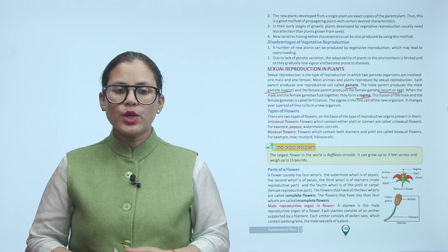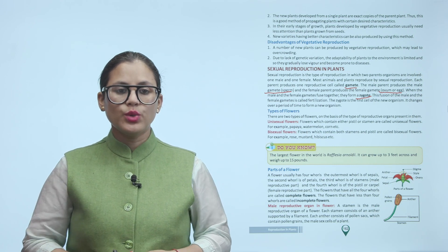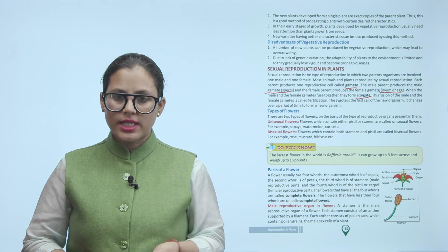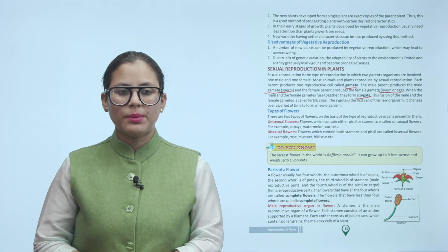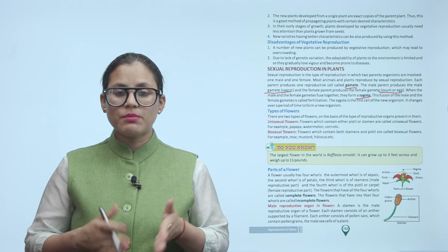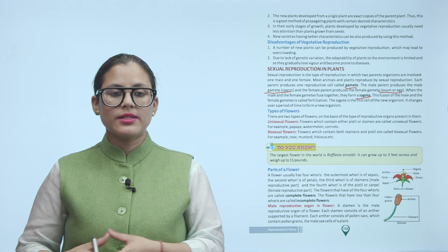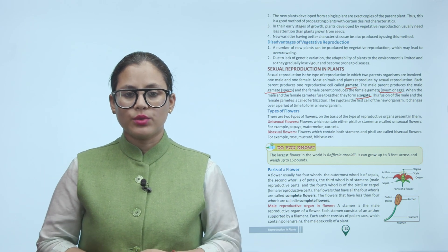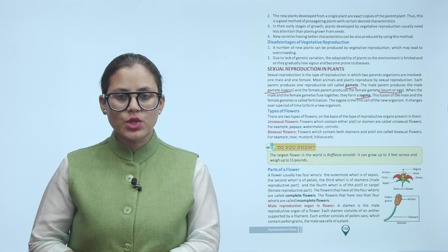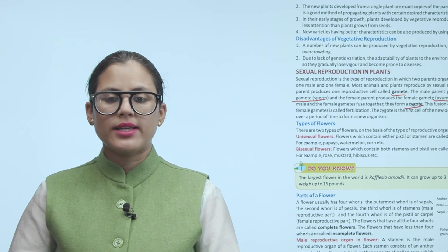Types of flowers: There are two types based on reproductive organs. Unisexual flowers contain either the pistil or the stamen — for example, papaya, watermelon, and corn. Bisexual flowers contain both stamen and pistil — for example, rose, mustard, and hibiscus. A flower usually has four whorls: the outermost whorl of sepals, the second whorl of petals, the third whorl of stamens (male reproductive part), and the fourth whorl of the pistil or carpel (female reproductive part). Flowers with all four whorls are complete flowers; those with fewer than four whorls are incomplete flowers.